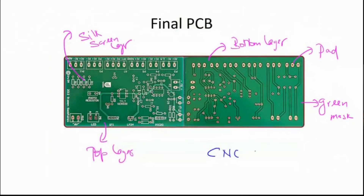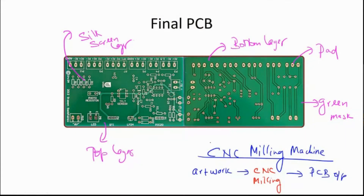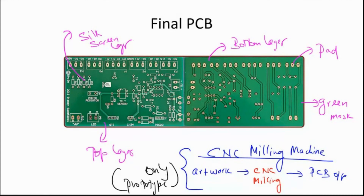With a CNC milling machine, you simply feed the PCB artwork as input and get the PCB output. This method is only for prototyping. For large volumes it is not practical because it takes too long.